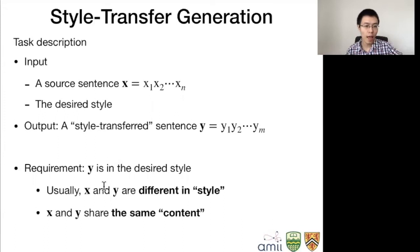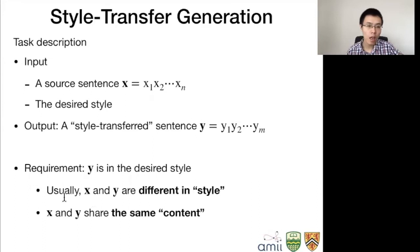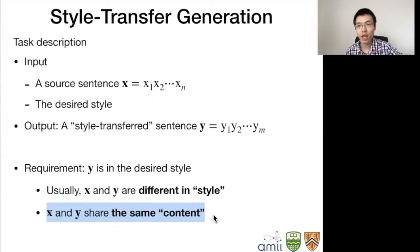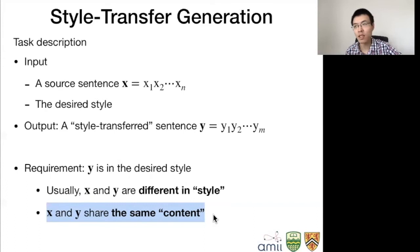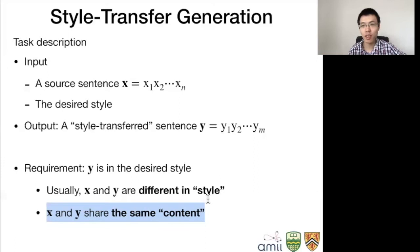The other implicit requirement is that X and Y usually share something in common — this is called the content. X and Y have to be similar in some aspect but different in another. Without this requirement, something funny could happen. For example, in sentiment style transfer, I could just memorize one positive sentence and one negative sentence. No matter what the input is, I give the memorized sentence for each style — like always returning 'I like the book' for positive regardless of input. Then the task also becomes degenerate, which is not desired.